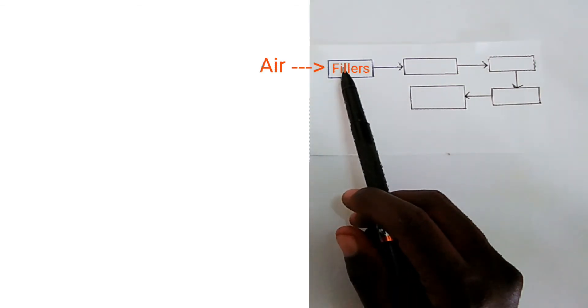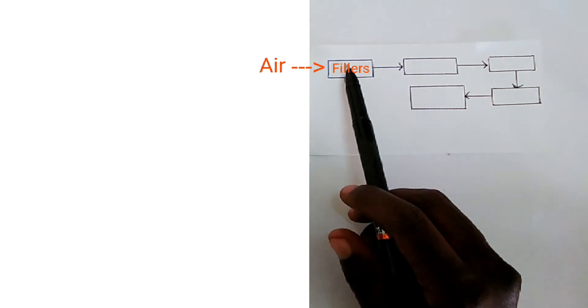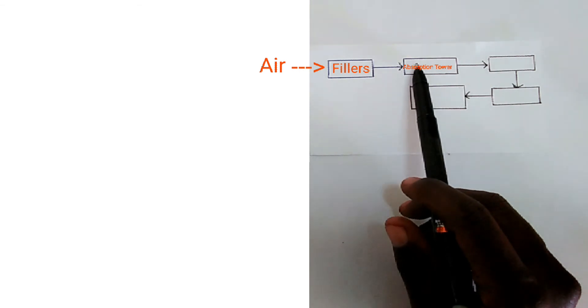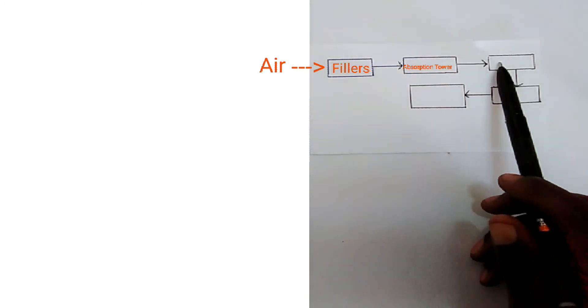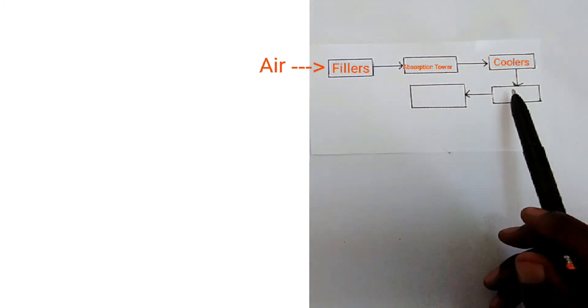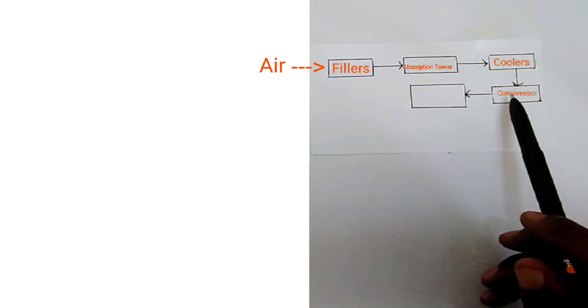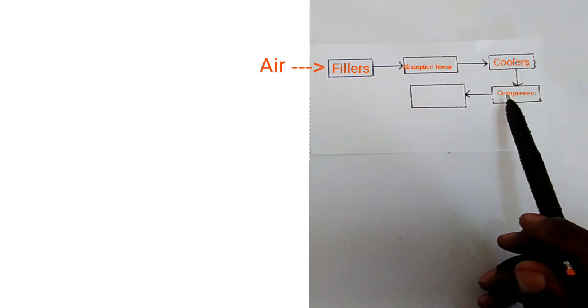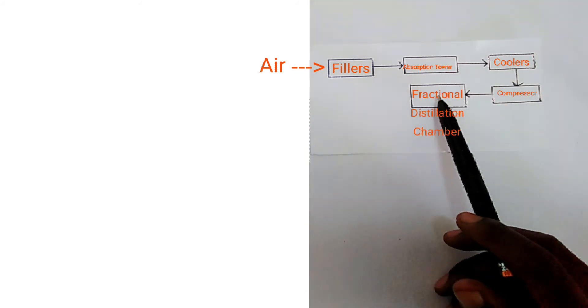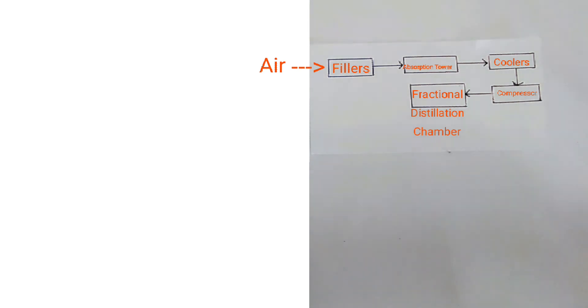Now the diagram below shows the industrial manufacture of nitrogen, oxygen, or argon. Air enters the filters here to remove dust particles. Then through the absorption tower, which contains concentrated sodium hydroxide, used to remove carbon dioxide. Then through the coolers — at a temperature of negative 25 degrees Celsius — to remove water vapor in ice form. Then to the compressor at conditions of negative 200 degrees Celsius and pressure of 200 atm, which is used to liquefy air and also remove helium and neon. The remaining liquefied air is pumped into the fractional distillation chamber, where it is heated. Nitrogen, with the lowest boiling point, distills off first, followed by argon, and lastly oxygen.